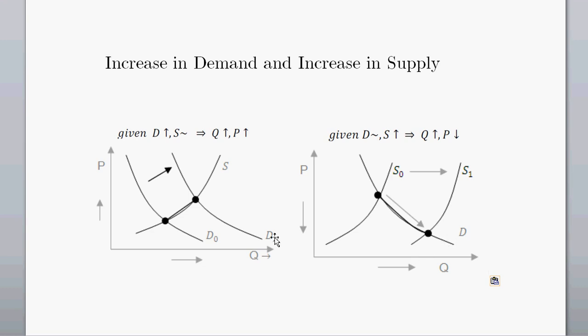When we combine these two things — increasing the demand curve and increasing the supply curve — since both individual parts had increases in quantity, we know that quantity is going to increase. However, in one case the price went up and in the other the price went down. So we can't really say anything about price, because it depends on the size of the shifts and the elasticity of these curves.